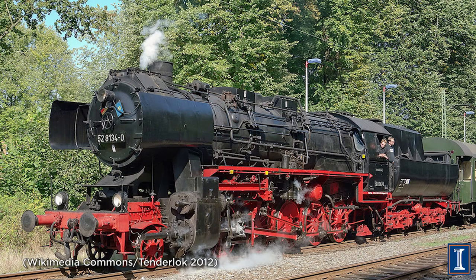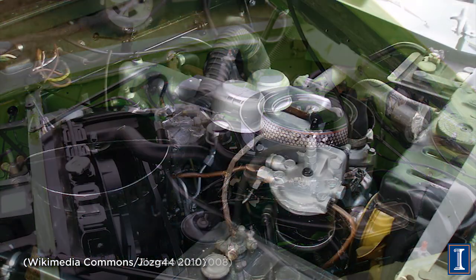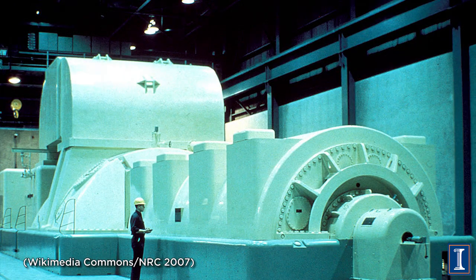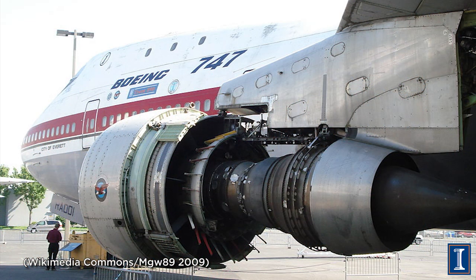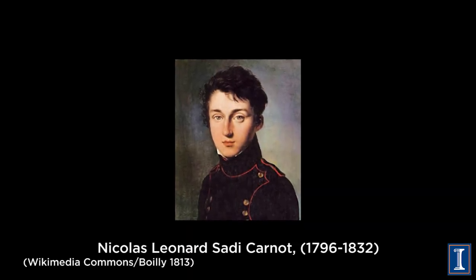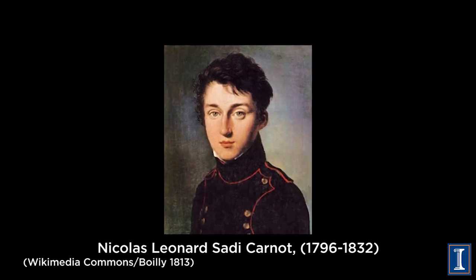Heat engines can come in many different types. You could have a steam engine, the normal automobile engine which uses an Otto cycle, a diesel engine which uses a diesel cycle, a power plant which uses a Brayton cycle, and jet engines have yet other types of cycles. There's a French engineer named Carnot who actually showed what the maximum efficiency for a heat engine could be.